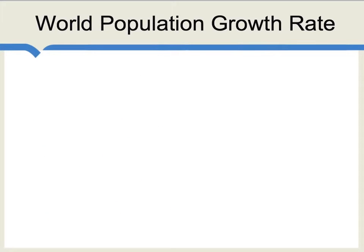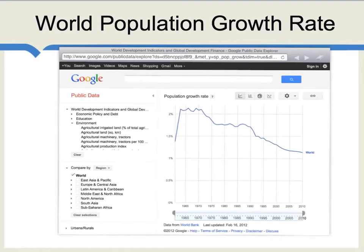Let's use the same technique to look at world population growth rates. Let's go to Google and pull in some data on world growth rates. Here from Google is the world's population growth rate. We can see that in the late 1960s and early 1970s, the world population was growing at a rate of about 2% per year — in other words, the total world population was doubling every 35 years. Today, however, we're much closer to 1% per year, and in fact we're even heading downwards. At a rate of growth of 1% per year, the total world population doubles every 70 years.